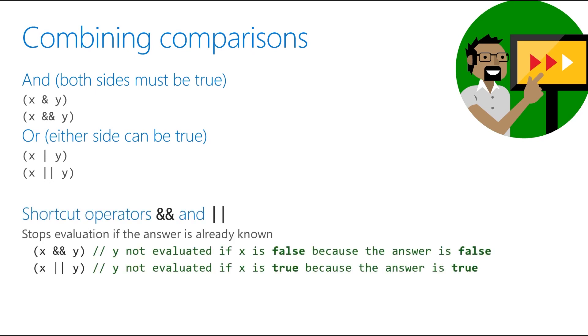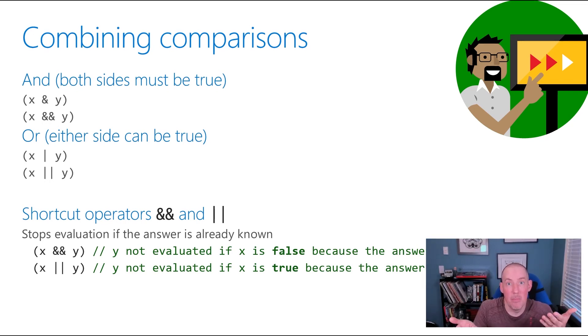Now, one thing that you might have noticed is the fact that we've got a single and a double of each one of those. You might be wondering, what's the difference? Well, the double is going to be known as a shortcut operator. What that will do is it will actually skip the second side if it turns out that the first side gave it the answer. In the case of an ampersand, which is our AND, what's going to happen is if the first value is false, it's going to skip evaluating the second. Why? Because if that first one is false, the entire thing is guaranteed to be false. They have to both be true in order for it to be true. If one's false, we've already failed it.